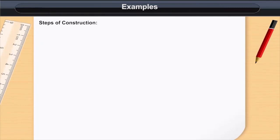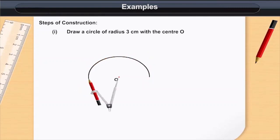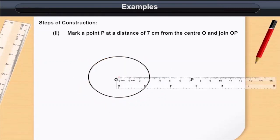Steps of Construction: 1. Draw a circle of radius 3 cm with center O. 2. Mark a point P at a distance of 7 cm from the center O and join OP.